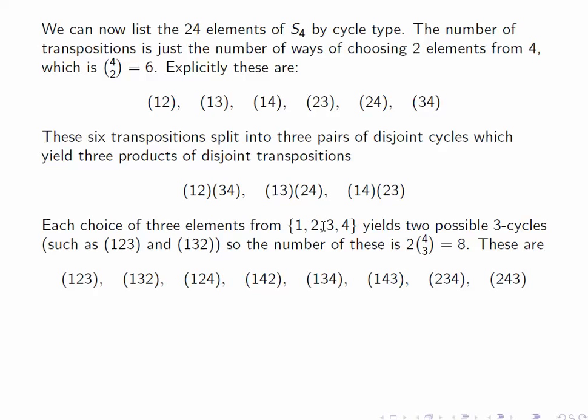Each choice of three elements from {1, 2, 3, 4} yields two possible 3-cycles, such as (123) and (132). So the number of these is 4 choose 3, which is 4, times 2, which is 8. And we can, again, list them explicitly as below.